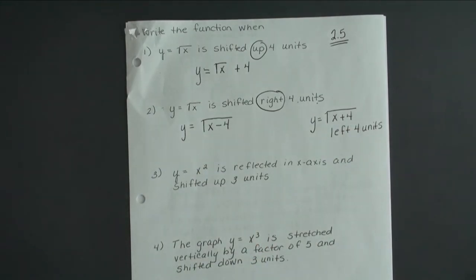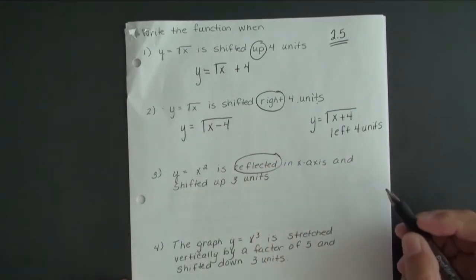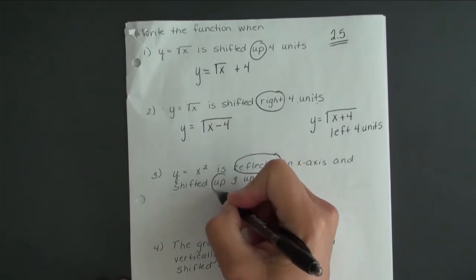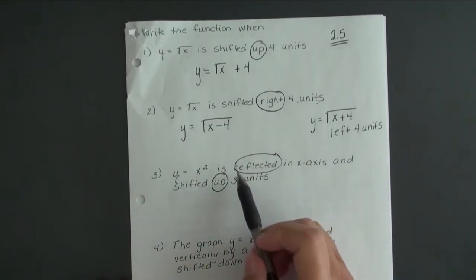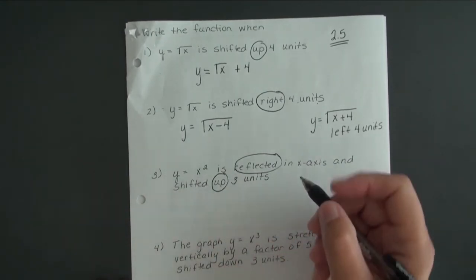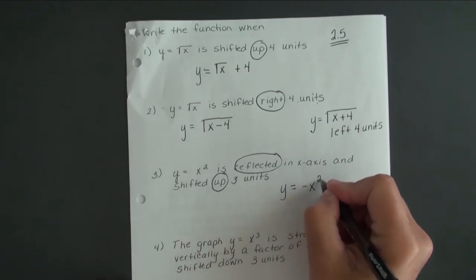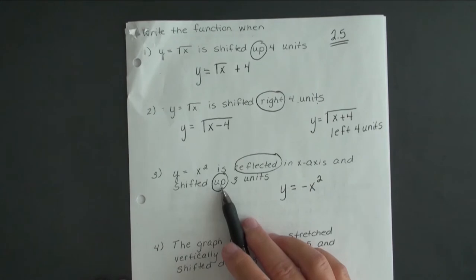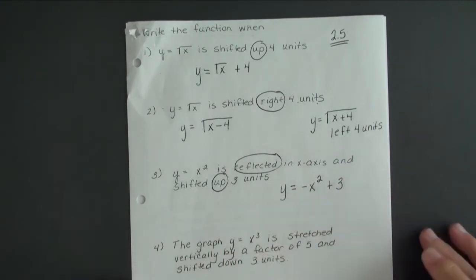In our third example, we have y equals x squared. We're going to reflect that in the x-axis and shift it up 3 units. A reflection involves a negative in front of the function, so that will be minus x squared. Then up 3 units would be plus 3, giving us y equals negative x squared plus 3.